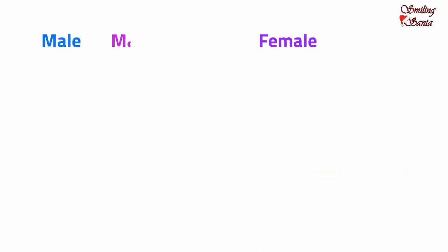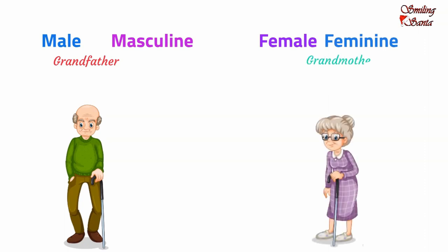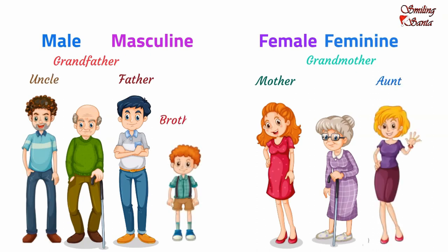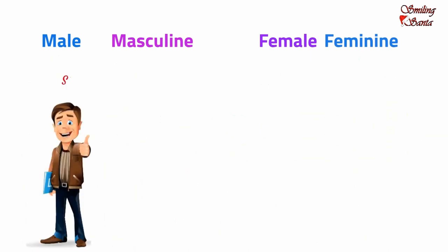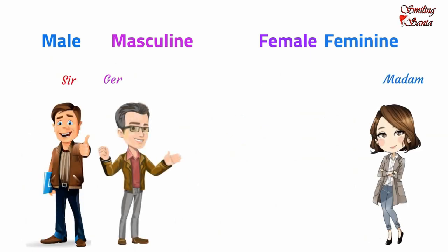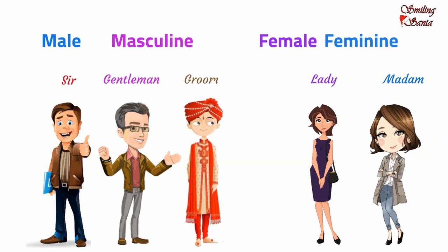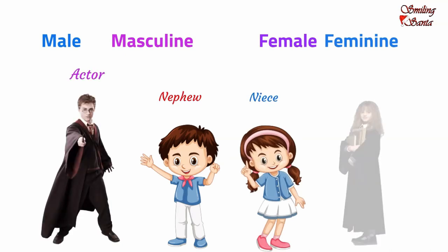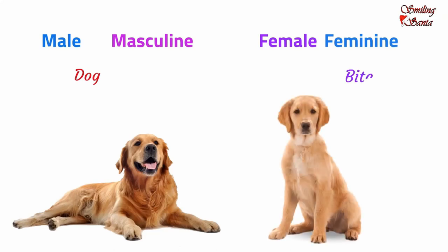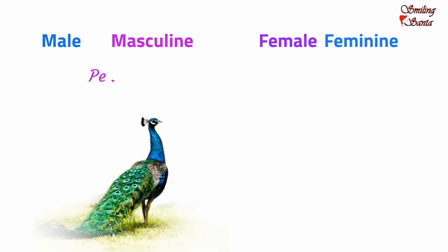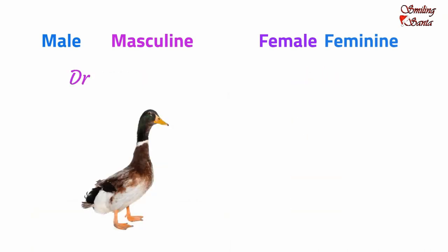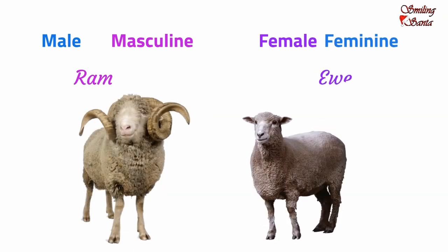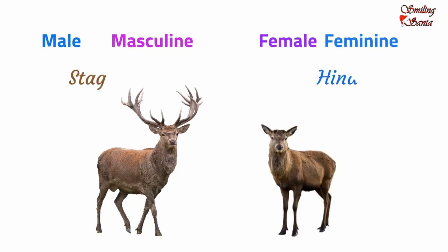In the same way, here are more masculine and feminine gender pairs: tiger / tigress, grandfather / grandmother, father / mother, uncle / aunt, brother / sister, sir / madam, gentleman / lady, groom / bride, nephew / niece, actor / actress, dog / bitch, fox / vixen, peacock / peahen, drake / duck, gander / goose, ram / ewe, stag / hind.